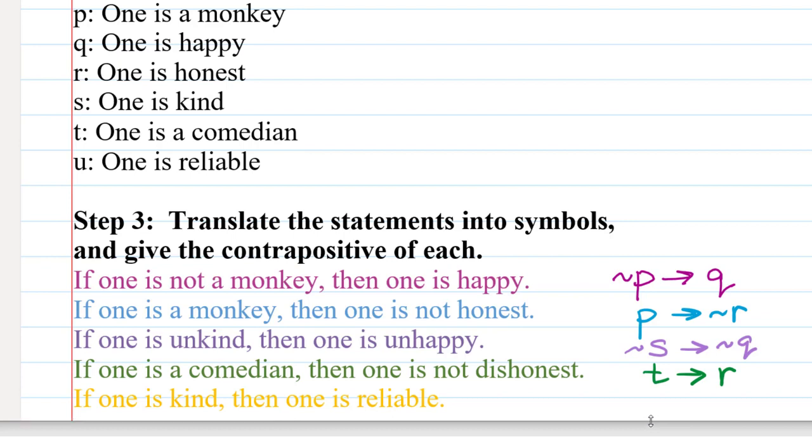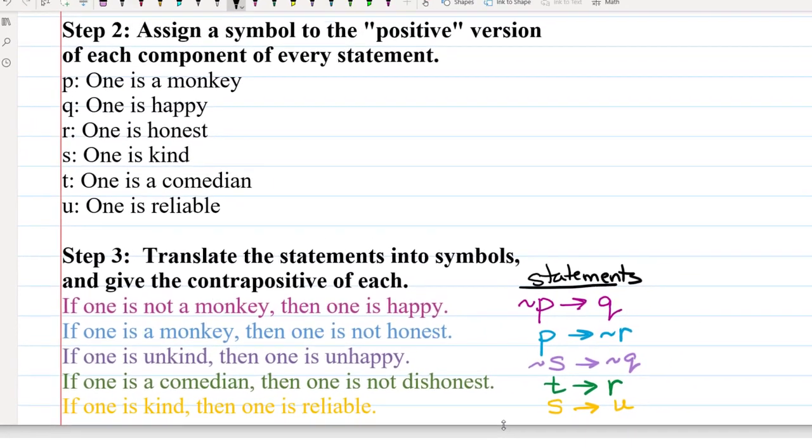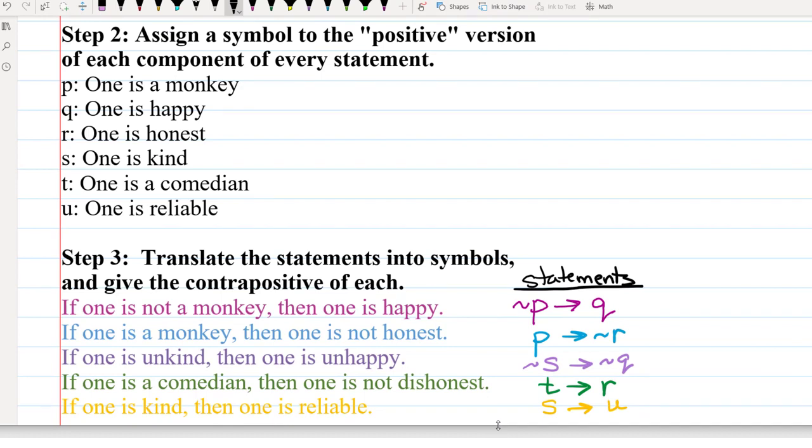And lastly, if one is kind, then one is reliable, would be S for kind implies U for reliable. These are our statements, and now it's really helpful when you're trying to come to a valid conclusion, and you want to see how these statements connect, to remember that the contrapositive of a statement is actually equivalent to the original statement. So for example, to say not P implies Q, if we change the order and the signs of the components, that's how I refer to it, the negation, I think of it like a sign, like from algebra, like in numbers.